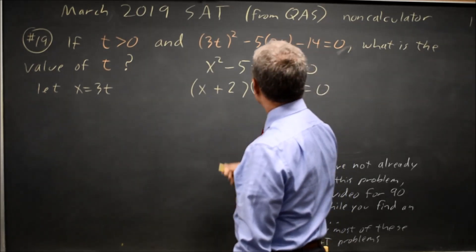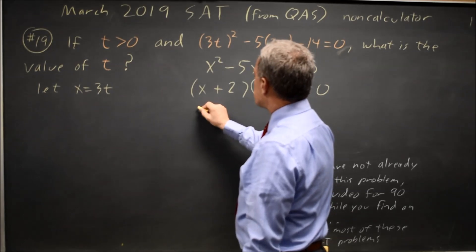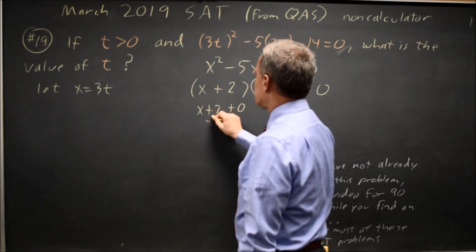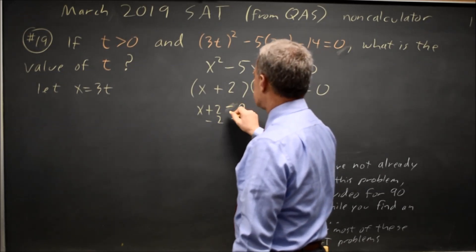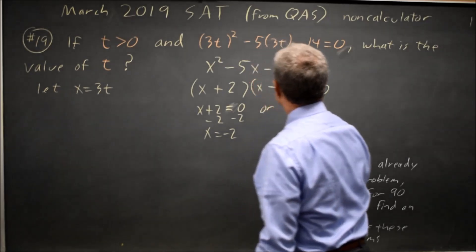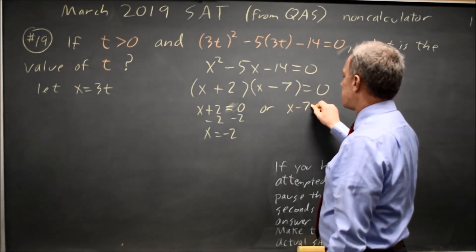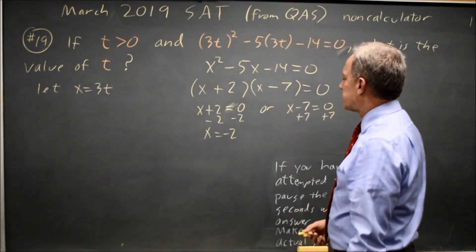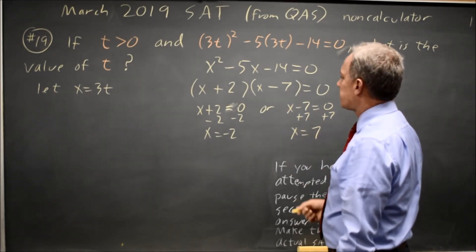And checking the FOIL, that does work. If this product is 0, then either the first factor is 0, x plus 2 equals 0, so x equals negative 2, or the second factor is 0, x minus 7 equals 0. Add 7 to both sides, always do the same thing to both sides of the equation, x equals positive 7.